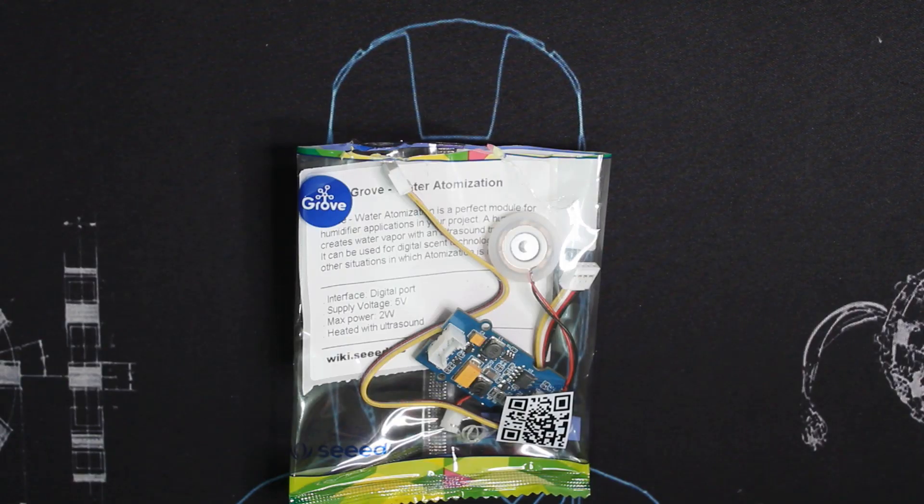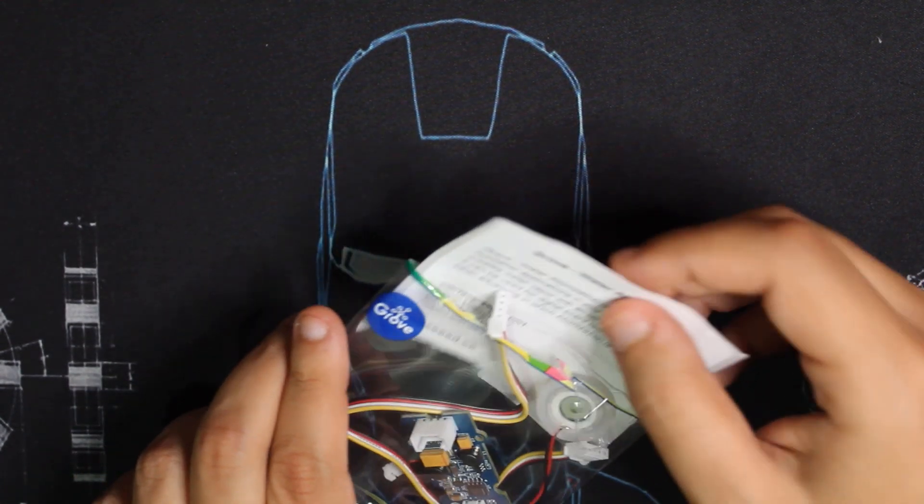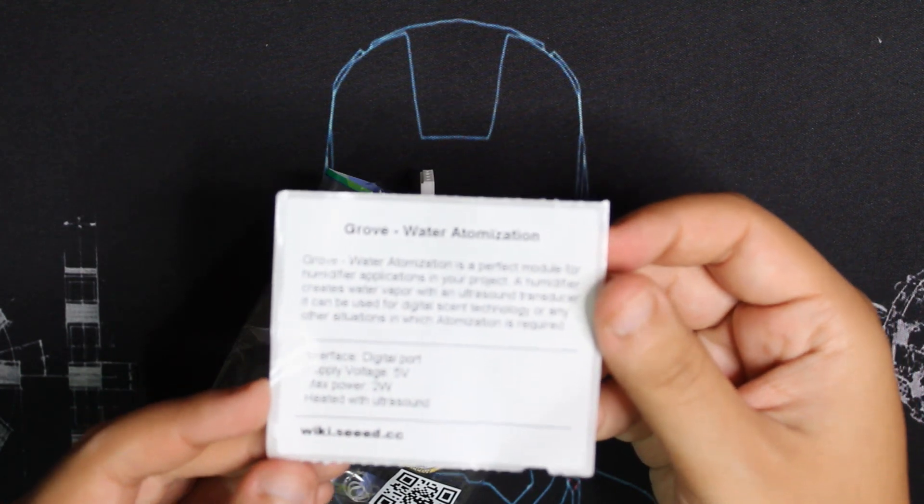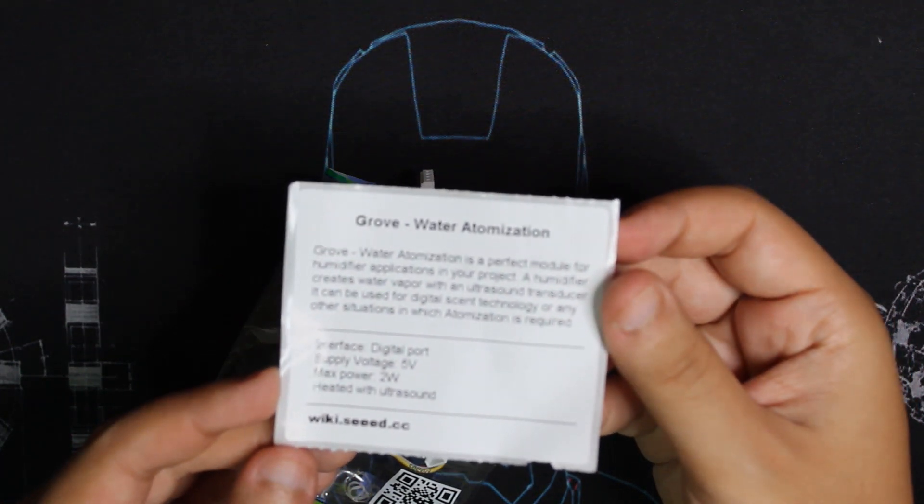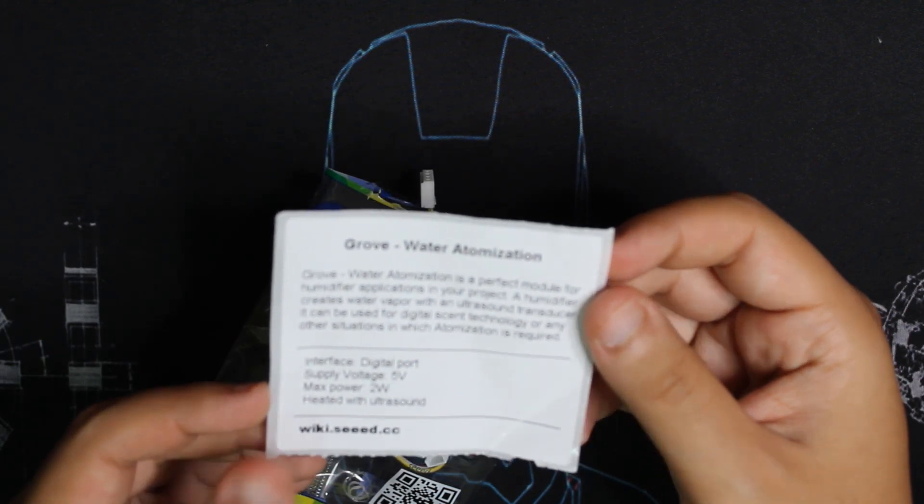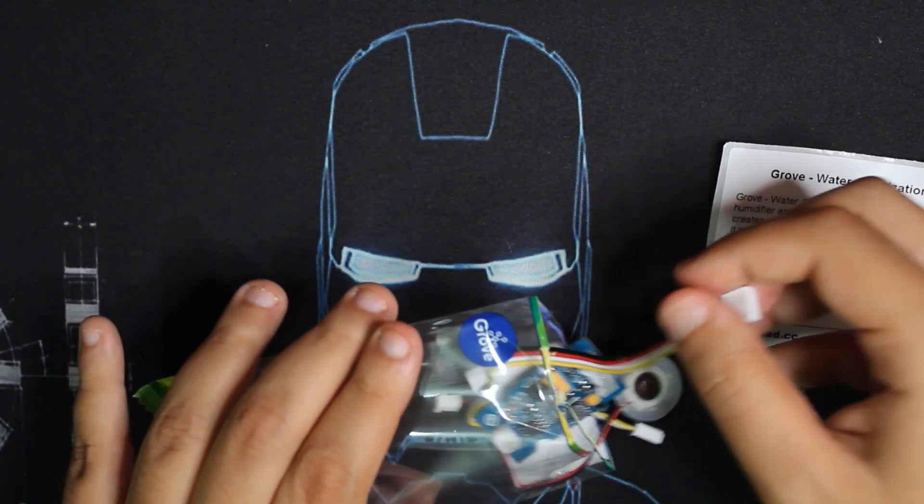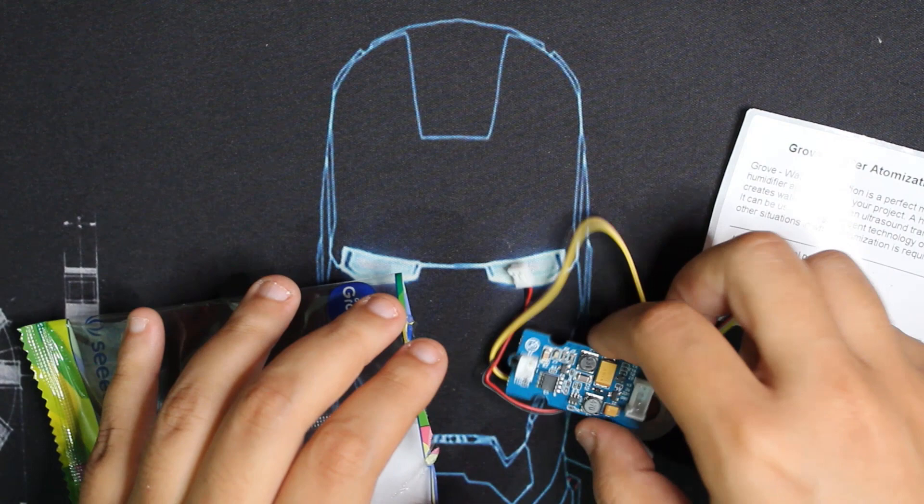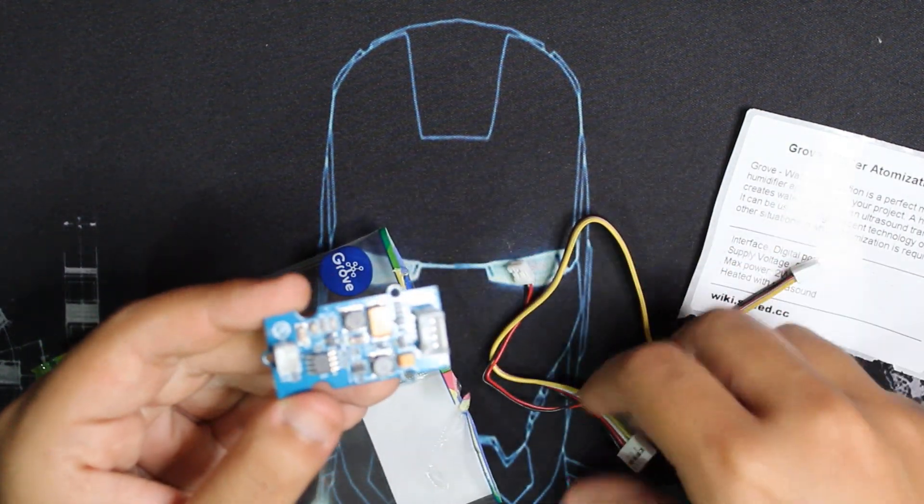The other product we're going to use is the Grove water atomization module. In the package it's always included with a sticker that tells you what the module does and some project ideas, also the supply voltage and max power. Here we have the module itself.